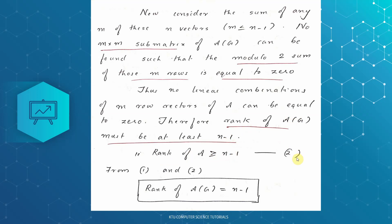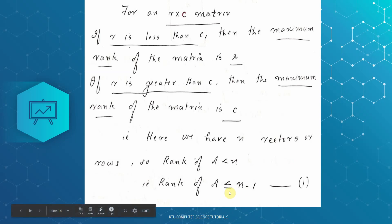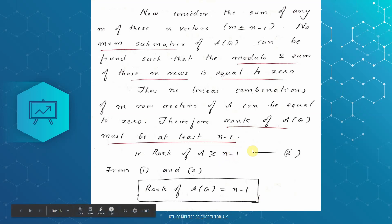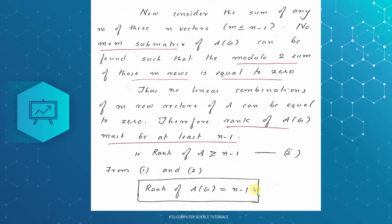The first equation gives rank of A less than or equal to n-1, and the second equation gives rank of A greater than or equal to n-1. If we combine them, rank of A(G) can only be equal to n-1. So the rank of the incidence matrix is equal to n-1.